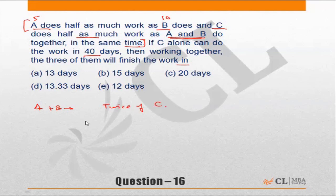Okay, then the question says C alone can do the piece of work in 40 days. So C can do it in 40 days. C can do the work in 40 days, and A and B together can do twice of C, that means A and B can finish the work in 20 days.